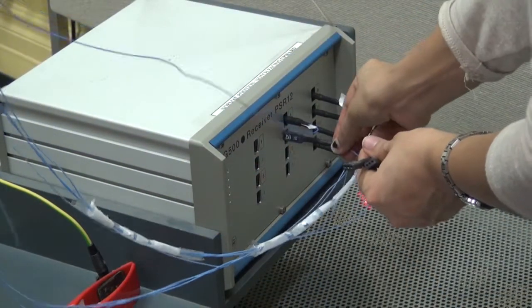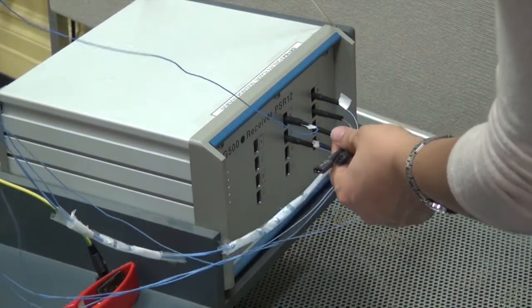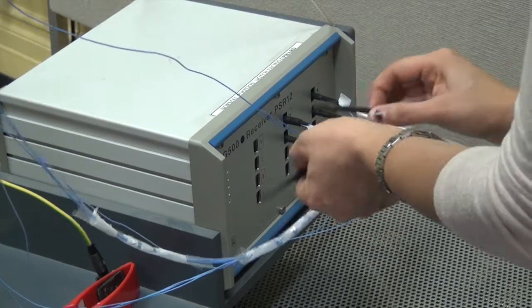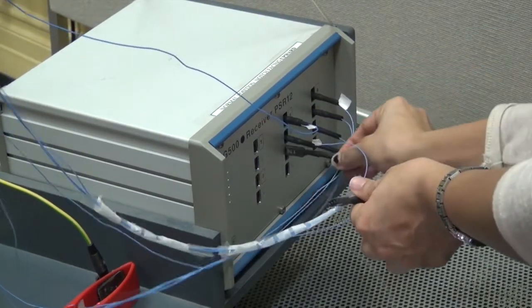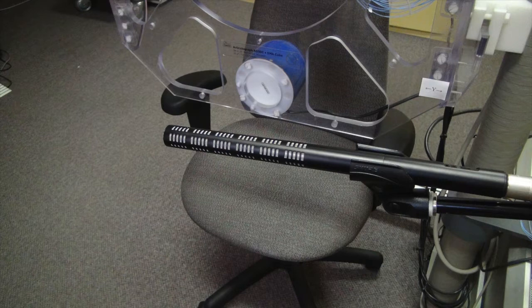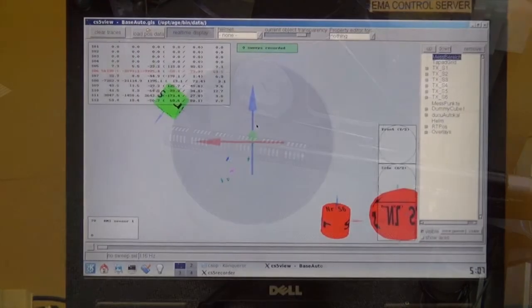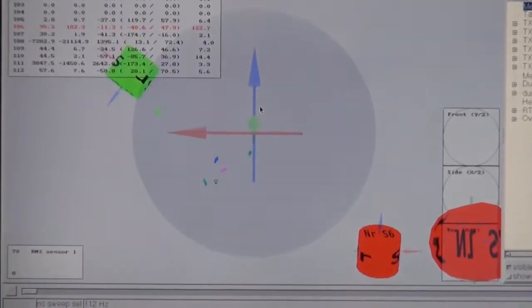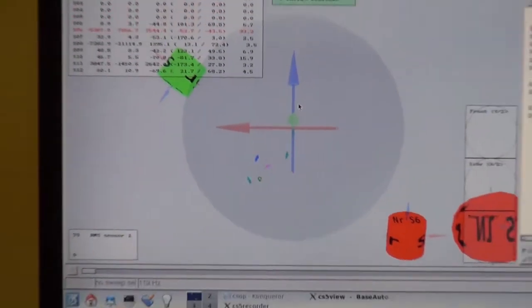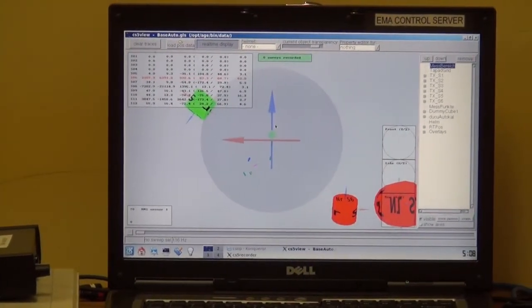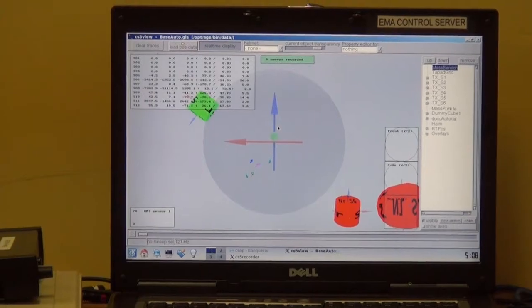An analog unit converts the receiver signals into data, a high-quality microphone records the acoustic signal of the productions, and software for data analysis graphs the sampling of the electrode's positions.